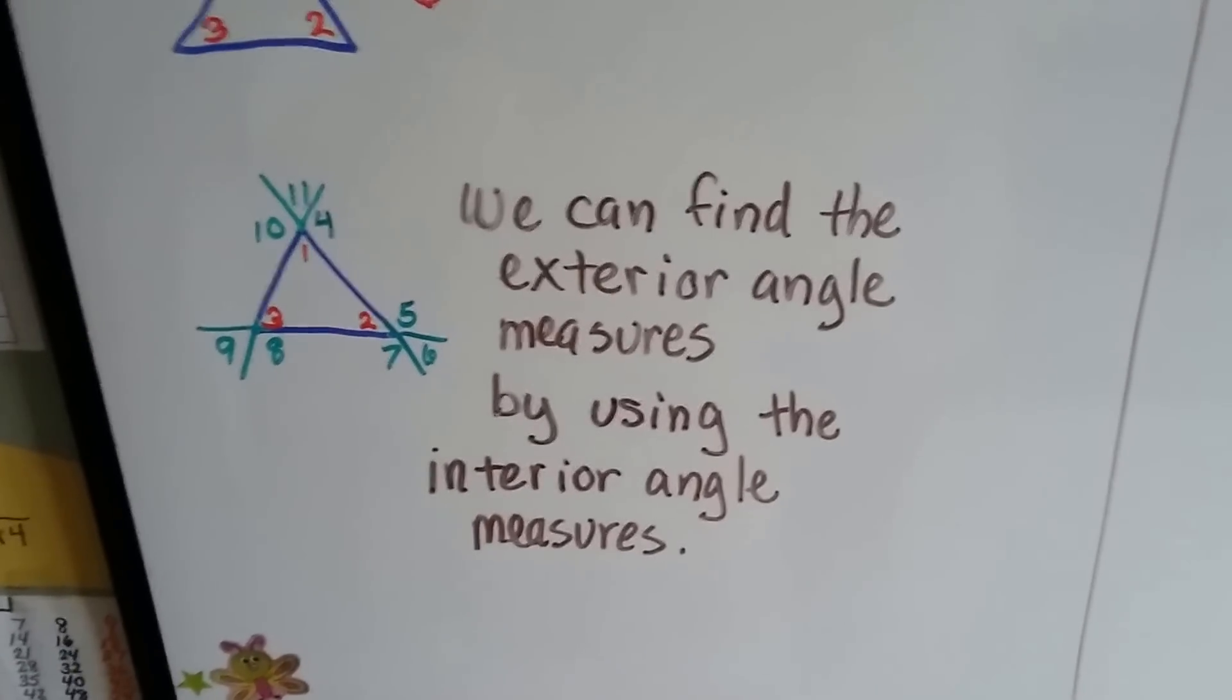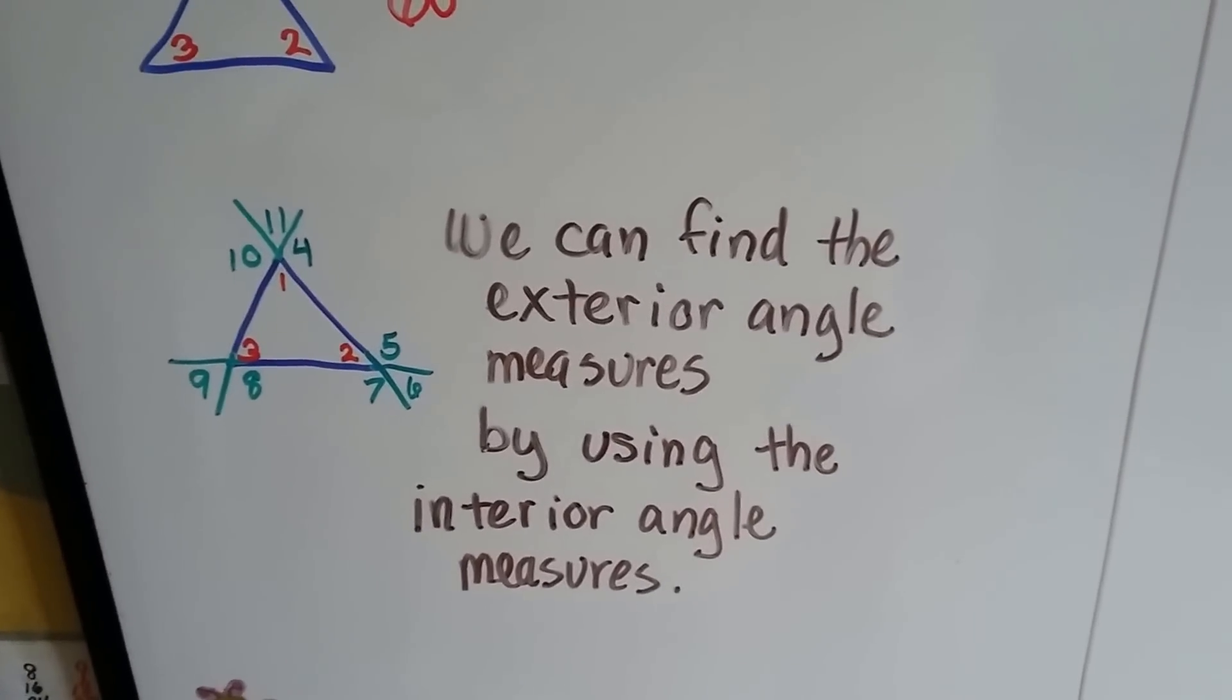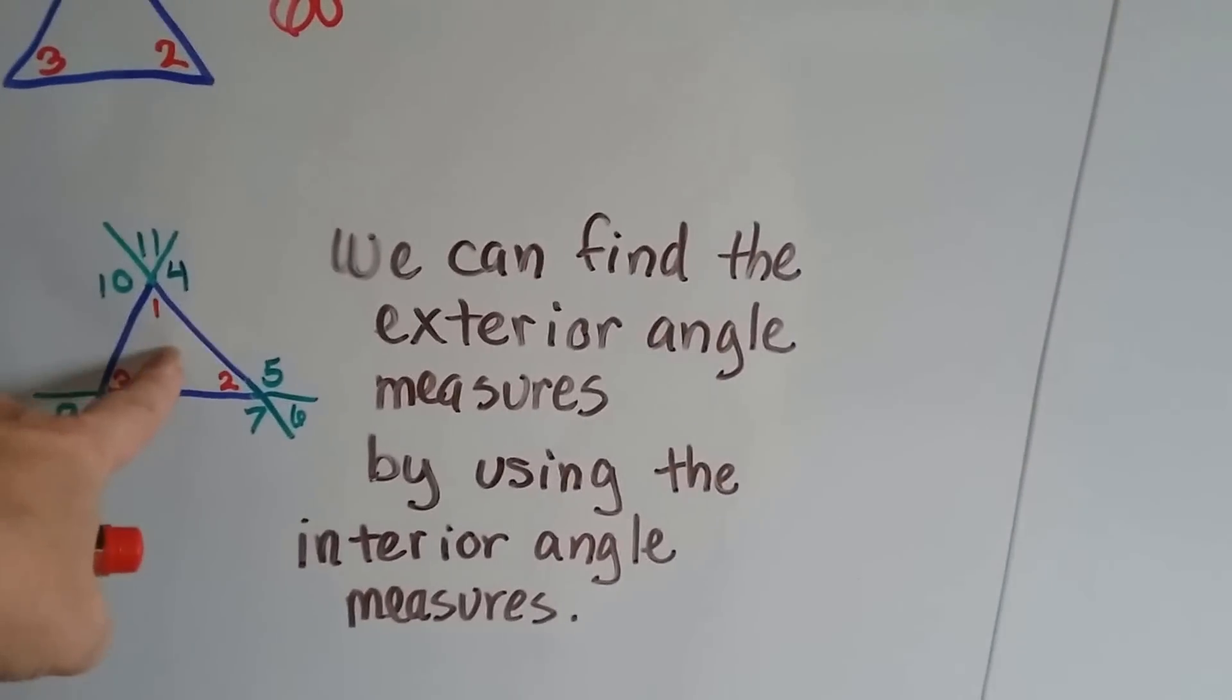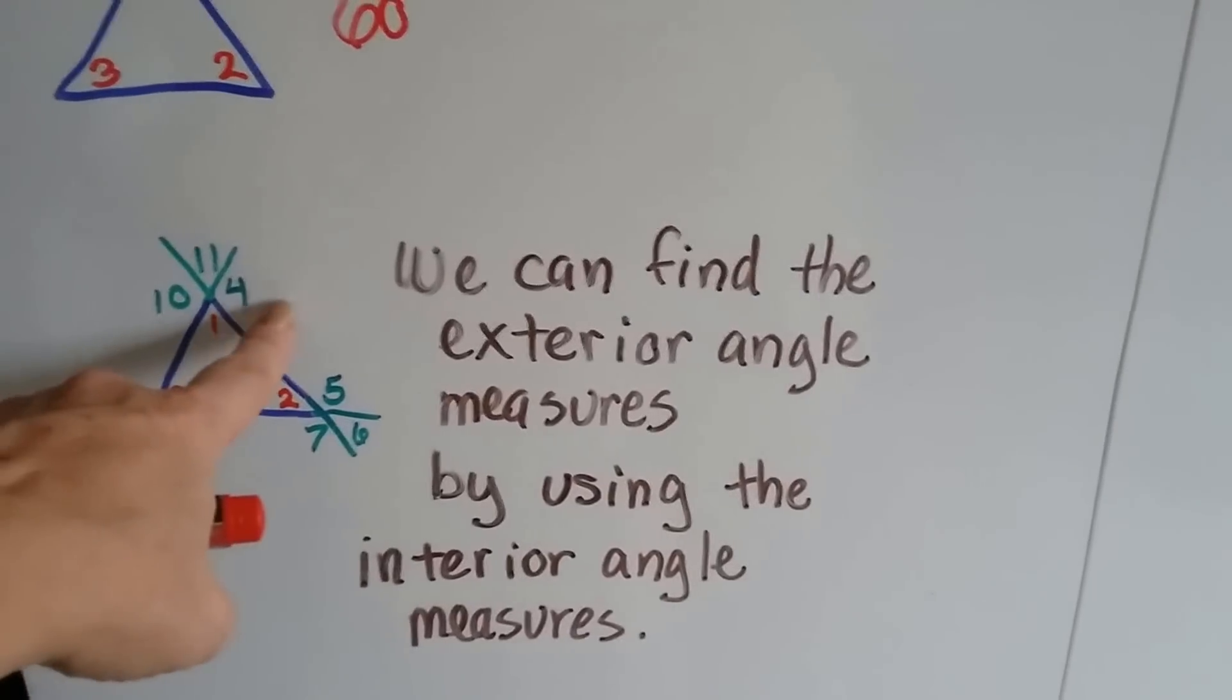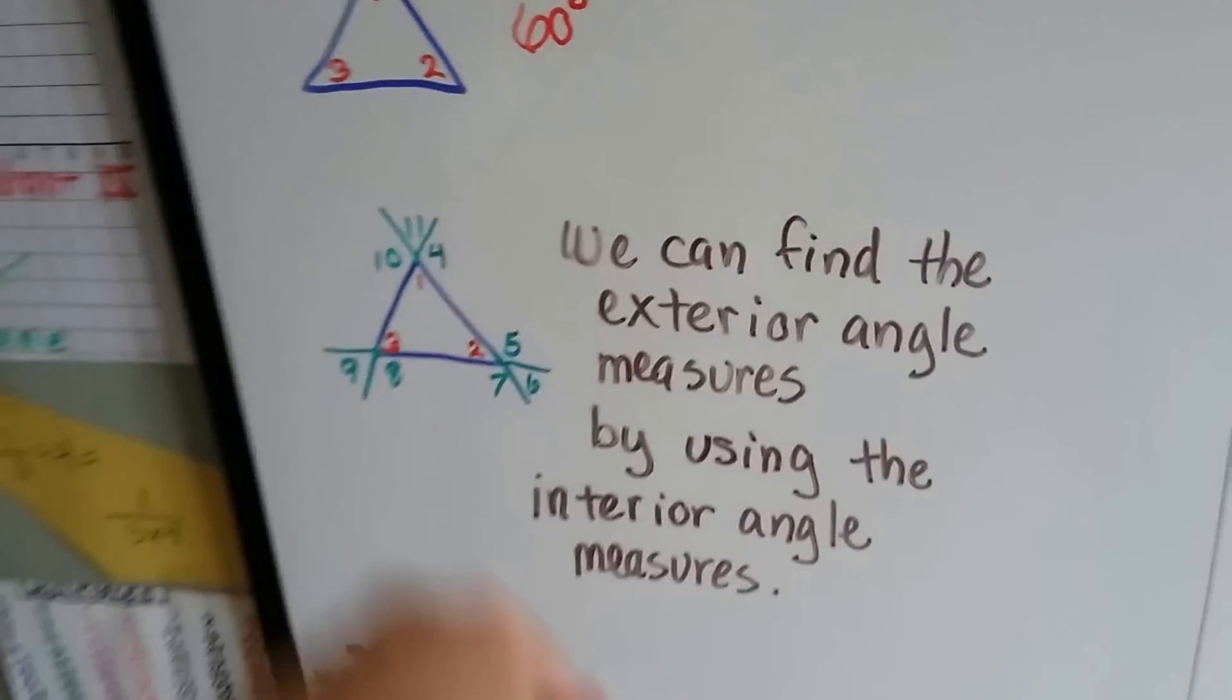Well, we can find exterior angle measures by using the interior angle measures. So if we know this is 60 degrees, I can use that knowledge to find out what 4, 11, or 10 is, or any of the other ones, if it's equilateral.